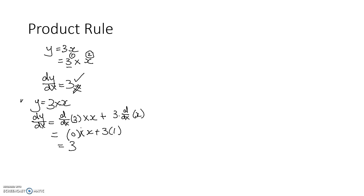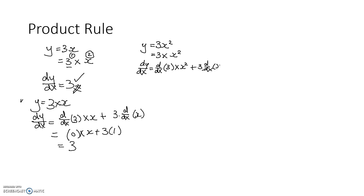Now a slightly more challenging example: if y equals to 3x squared, this is 3 times x squared. Step by step: differentiate the constant 3 (gives 0) multiplied by x squared, plus keep 3 and multiply by the differential of x squared. The differential of 3 is 0, so 0 times x squared is 0. The differential of x squared is 2x, so 3 times 2x gives dy/dx equals 6x.